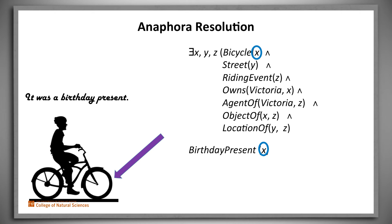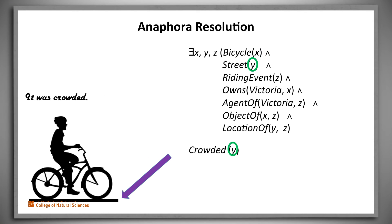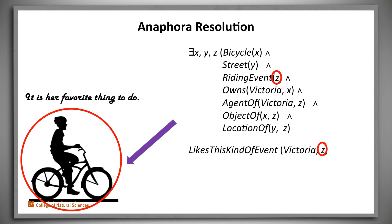Or we can write an unambiguous claim for the second example: y, the street, was crowded. Or, for the third example: z, the riding event, is Victoria's favorite kind of thing.